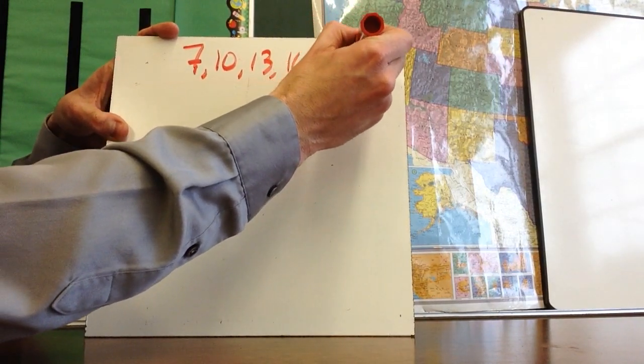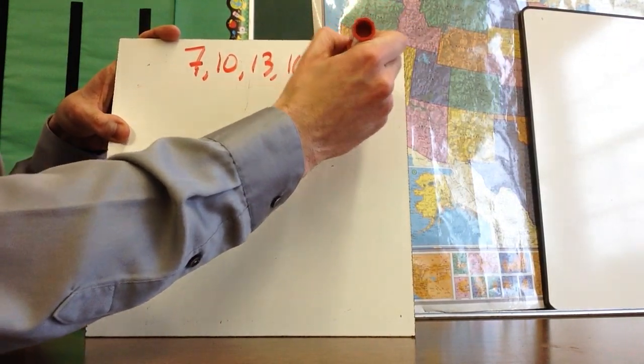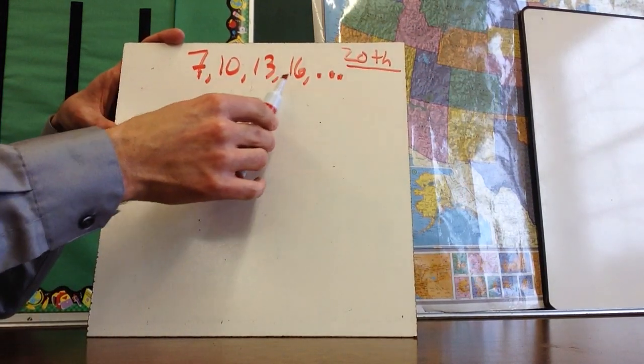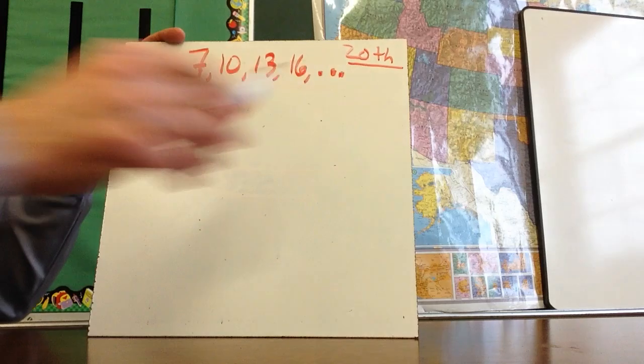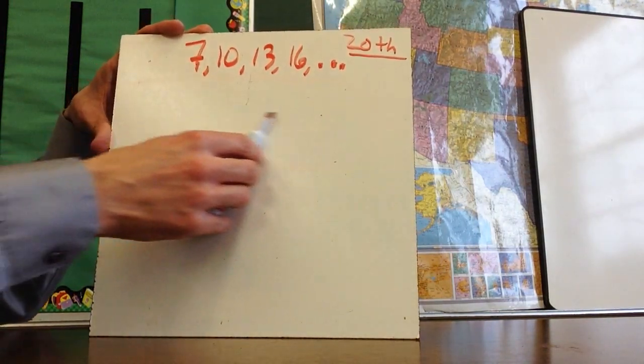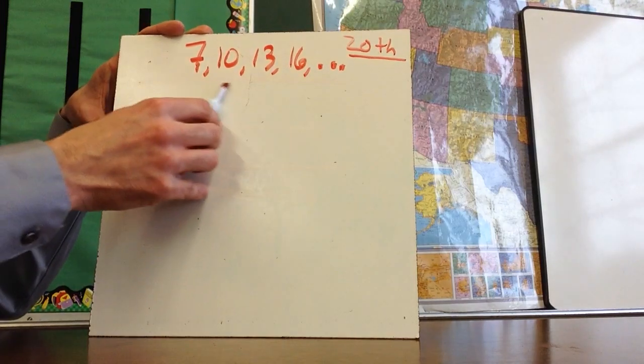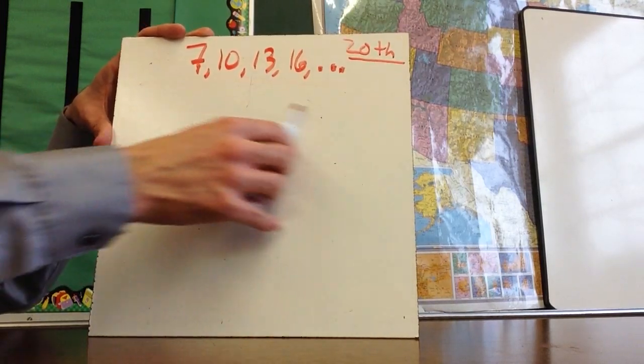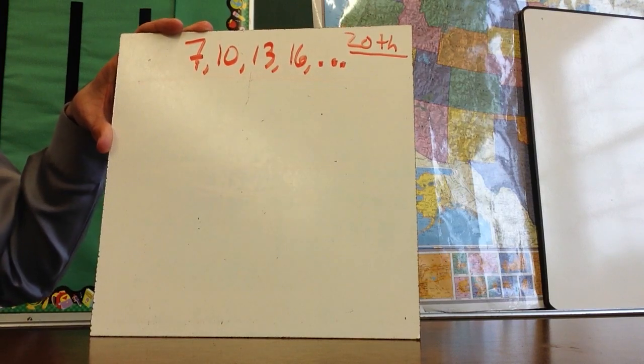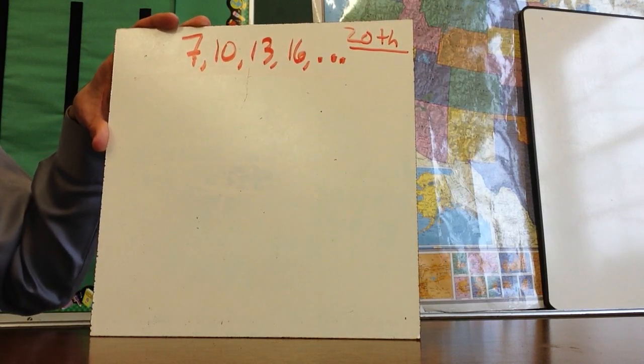Maybe I want to find what is the 20th term of this equation. So this is the first term, the second term, the third term, the fourth term. I want to go all the way to the 20th term without having to write out—obviously I could just keep adding three all the way until I get to the 20th number and I'd have my answer. But there's got to be a faster and easier way.